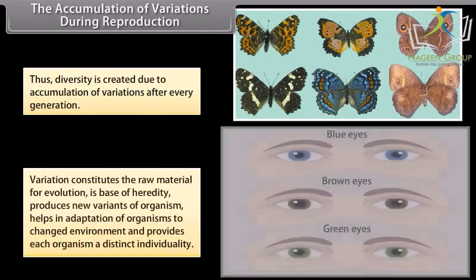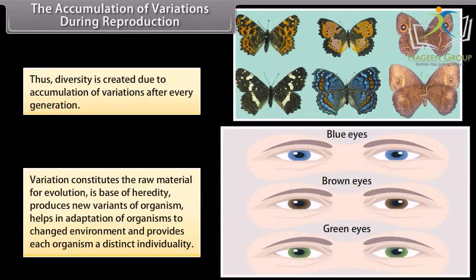Variation constitutes the raw material for evolution, is the base of heredity, produces new variants of organisms, helps in adaptation of organisms to a changed environment, and provides each organism a distinct individuality.